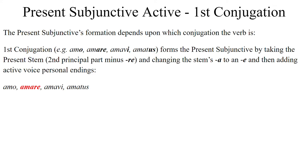The subjunctive is formed by taking the present stem of the verb — that is the second principal part minus the -re. Then you will change the stem's letter A, because once you chop off the -re, what's left, the present stem, will always end in the letter A — that's how you know it's a first conjugation. So you change that A to an E, producing a vowel shift, and then the active voice personal endings are added.